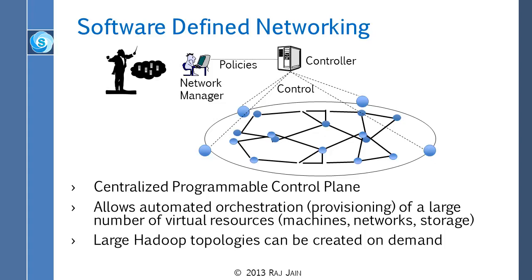The control plane doesn't have to be very fast, although it requires lots of computation. Forwarding has to be done fast — it does not require any computation, it's just a table lookup. So the data plane is done in hardware, and the control plane is done on a processor — a CPU. Generally, each router or switch has a processor which talks to other routers and switches, and then figures out what the shortest path to different places is.